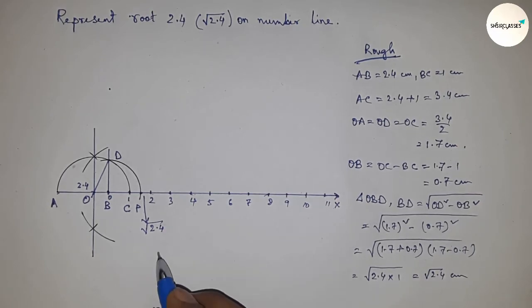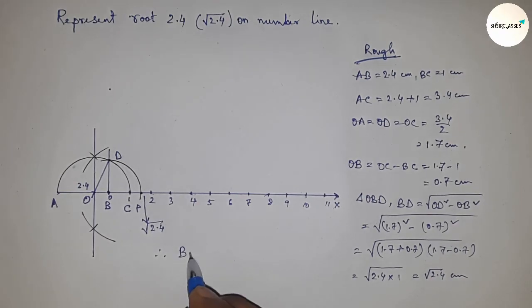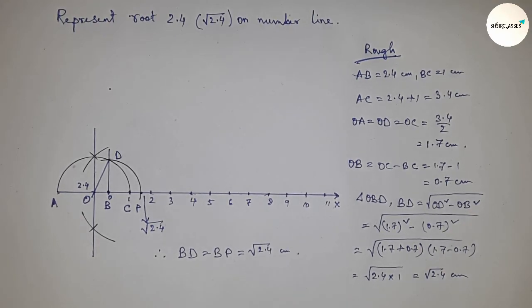Therefore, the distance BD and BP are equal, so BD equals BP equals root 2.4 centimeters. That's all. Thanks for watching. Please subscribe, like, and comment on my video.